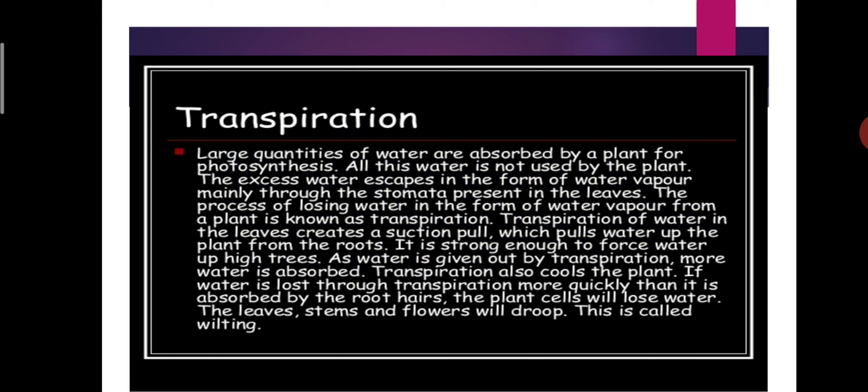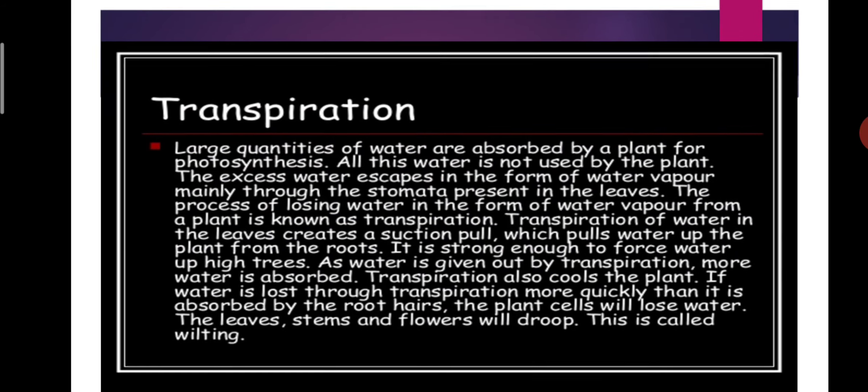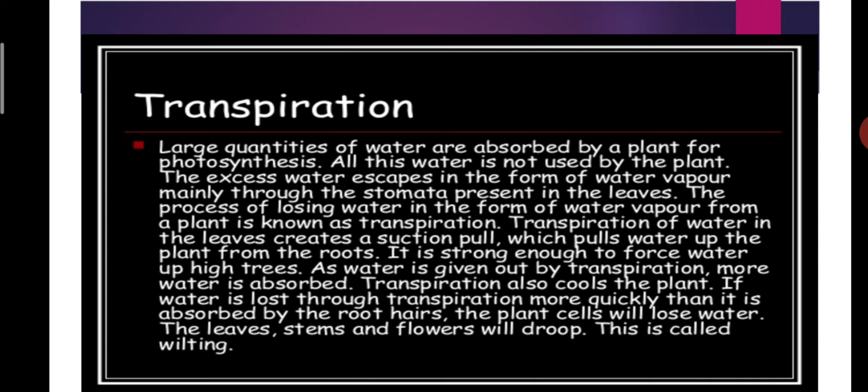The plant absorbs most of the water through its roots for photosynthesis, but all this water is not used. The excess water escapes in the form of water vapor through the stomata present in the leaves. The process of losing water in the form of water vapor is called transpiration.